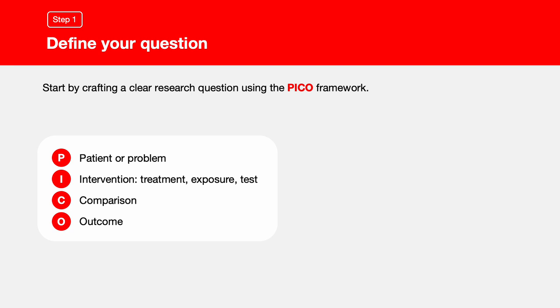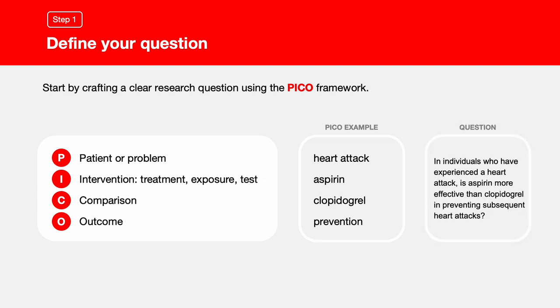Let's put this into practice with the topic of heart attacks. Imagine patients who have suffered a heart attack. We're curious about the effectiveness of aspirin therapy and how it compares to another drug. The outcome we're focused on is which treatment does a better job at preventing future heart attacks. So our PICO question becomes: in individuals who have experienced a heart attack, is aspirin more effective than clopidogrel in preventing subsequent heart attacks?